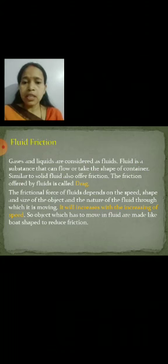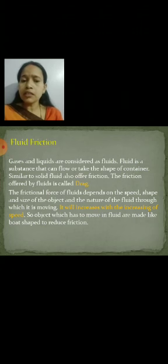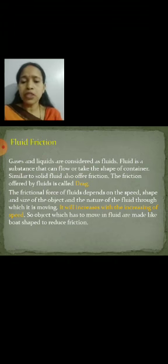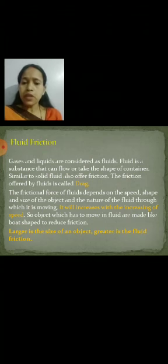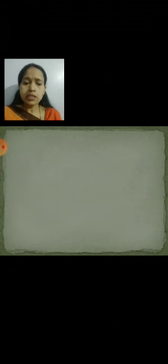So friction depends on speed, shape, and size, and it increases with increasing speed. Objects which have to move in a fluid are made in a streamlined shape to reduce friction. The larger the size of an object, the greater the fluid friction. This is all about this chapter — thank you.